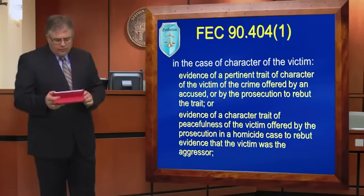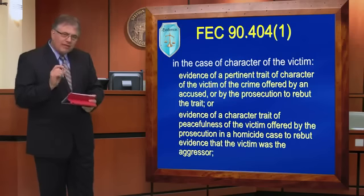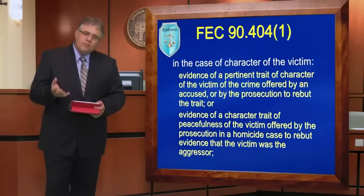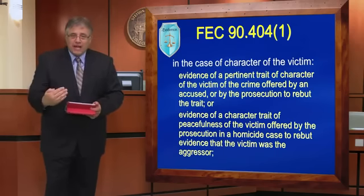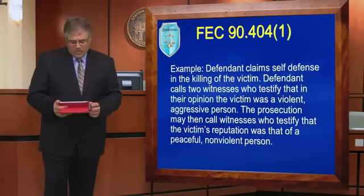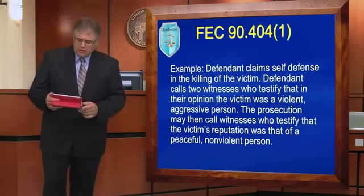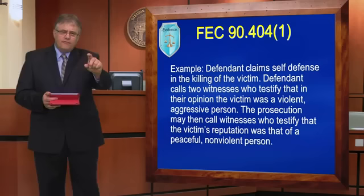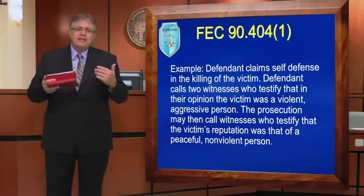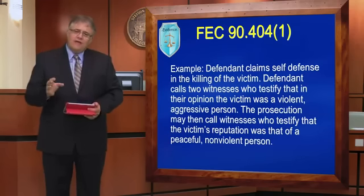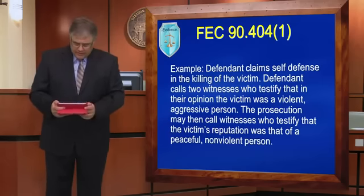It works the same way with the character of the victim, with the caveat that in a homicide case, once evidence has been put on that the victim was the aggressor, I can offer character evidence to rebut that — because the victim is not there to provide character evidence themselves. For example, a defendant claiming self-defense in the killing of the victim: when a defendant claims self-defense, that's a tripwire telling us they must be saying the victim was the aggressor. That means character evidence of the victim for peacefulness is now admissible to rebut that position.